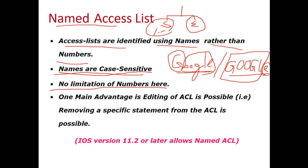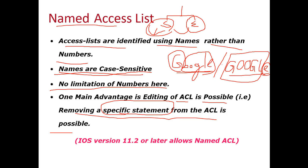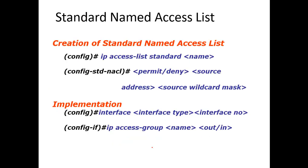One major advantage of named ACL is that editing is possible — you can remove a specific statement from the ACL rather than having to follow sequential order. This is not available in numbered access lists. Cisco IOS version 11.2 or later allows named ACL, and versions greater than 11.2 allow you to edit named ACL.